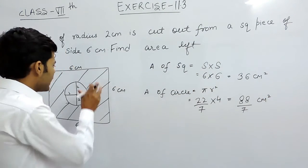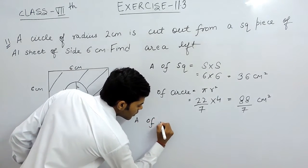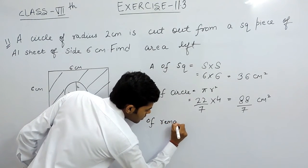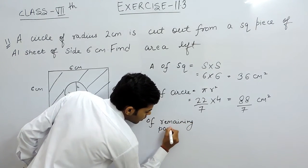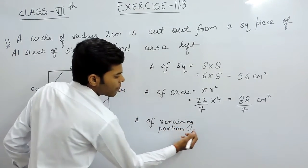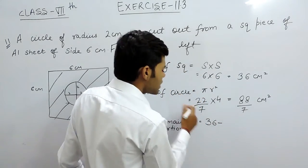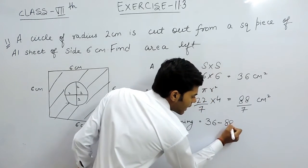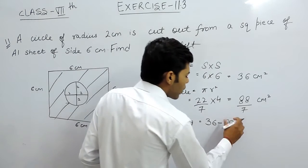So as we have to find the area of this remaining portion, area of remaining portion will be equal to the area of square, that is 36, minus the area of this circle, that is 88 by 7. So we can do this in decimal.